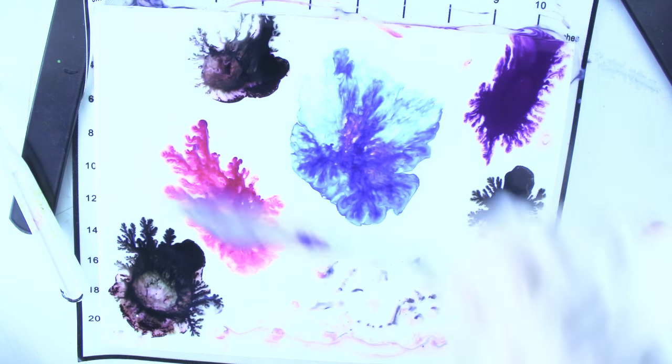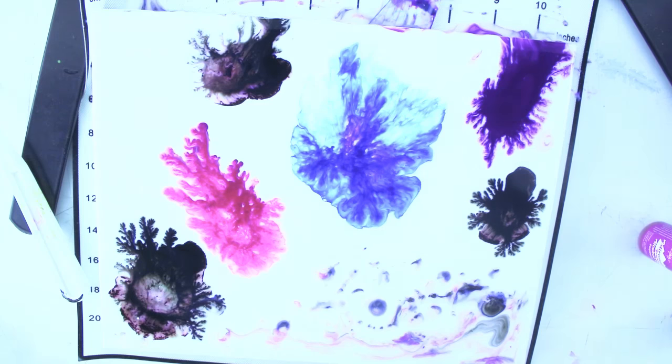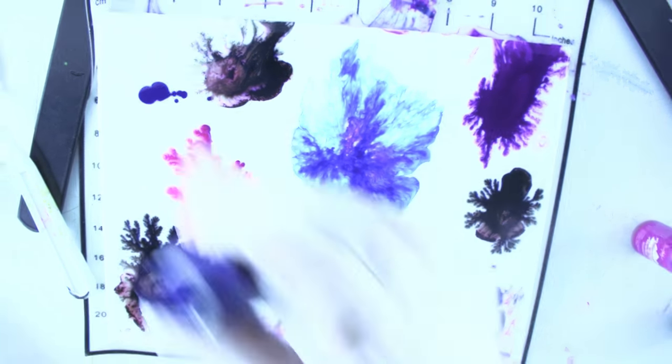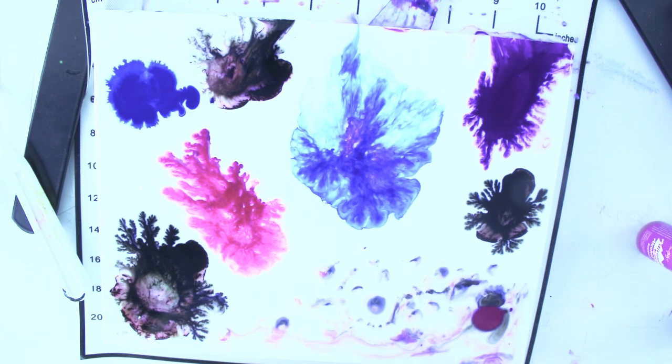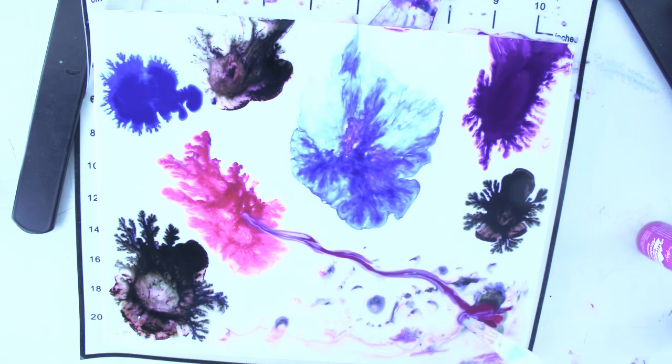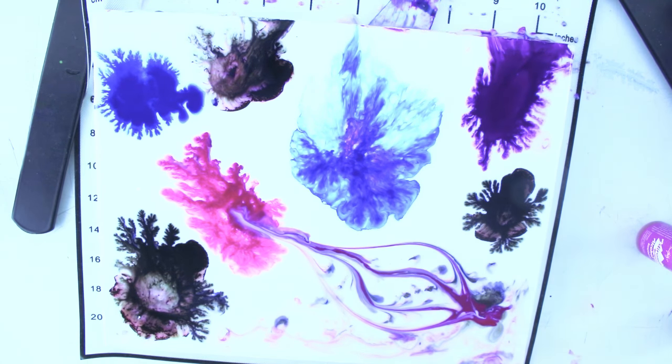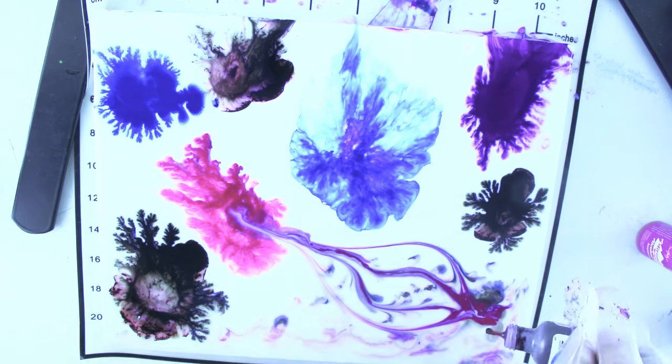Pablo Picasso said, the world doesn't make sense, so why should I paint pictures that do? Piet Mondrian said, all painting, the painting of the past as well as of the present, shows us that its essential plastic means were only line and colour.